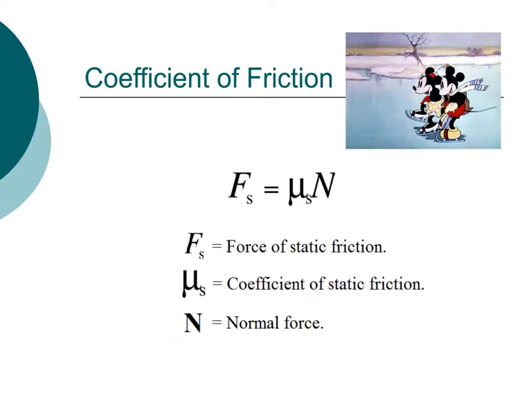The frictional force is proportional to the coefficient of friction. Since the amount of force required to move an object starting from rest is usually greater than the force required to keep it moving at a constant velocity once it starts, two coefficients of friction are sometimes quoted for a given pair of surfaces, depending on what two surfaces are moving together.